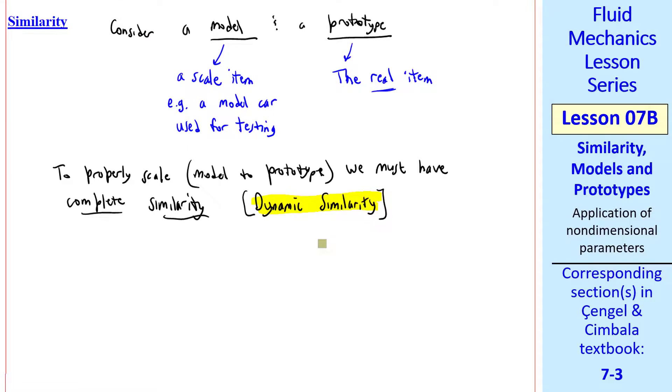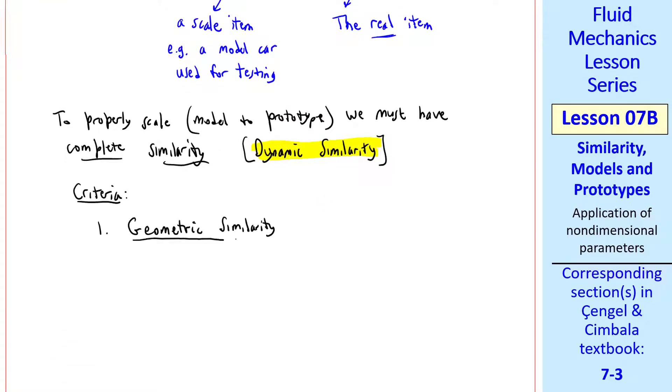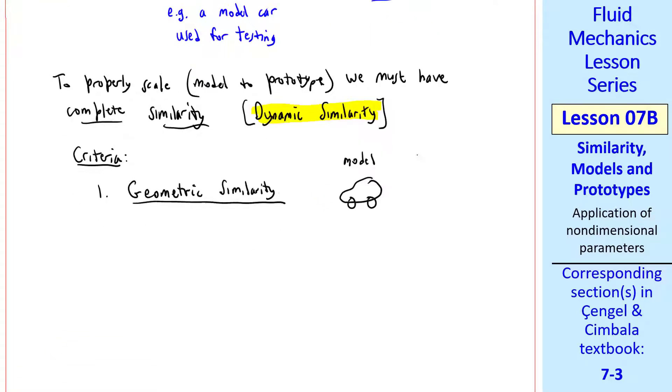There are three criteria for similarity. First, we must have geometric similarity between the model and the prototype. For example, here the model is smaller than the prototype, but they're the same geometry. Note that a model doesn't have to be smaller than the prototype. It can actually be bigger. Here, I tested golf balls one time in a wind tunnel, and I used golf balls that were about the size of a baseball. But the more usual case is that the model is smaller than the prototype. Geometric similarity implies proportional geometry. In other words, they're the same geometry, just different sizes.